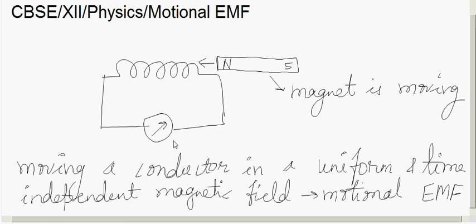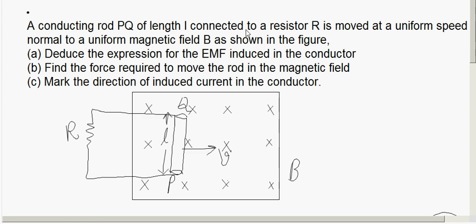Let us discuss Motional EMF. This is a continuation of the previous class. In the previous class, we saw that EMF is also induced when a conductor is moved in a uniform magnetic field.